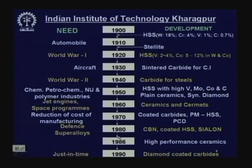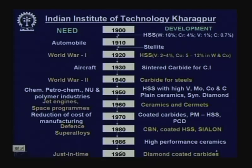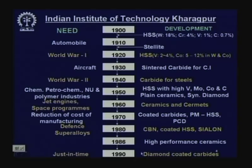In 1986, high performance ceramics were developed — ceramic cutting tools are unique but have certain weaknesses, and overcoming those weaknesses led to high performance ceramic tools for machining at very high speeds. From 1990 onward, just-in-time production demanded very capable cutting tools, leading to development of diamond-coated carbides — cemented carbides coated with a thin film of diamond.